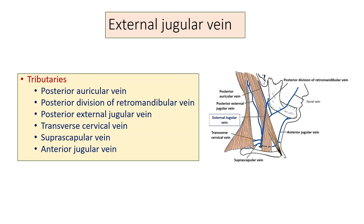Coming to the tributaries of the external jugular vein: they are the posterior auricular vein, the posterior division of the retromandibular vein, the posterior external jugular vein, the transverse cervical vein, the posterior triangular vein, the suprascapular vein, and the anterior jugular vein.